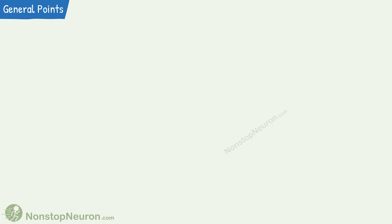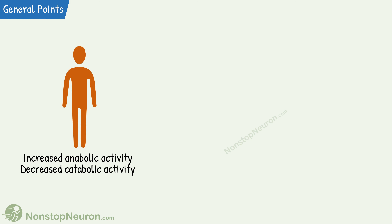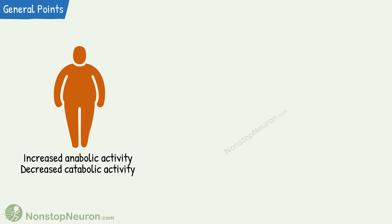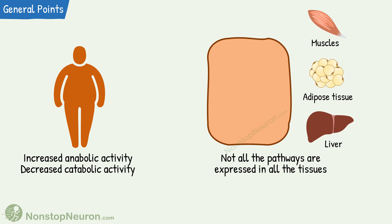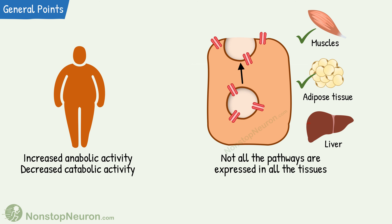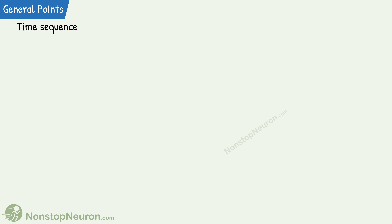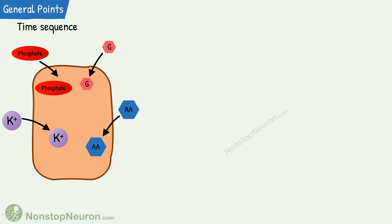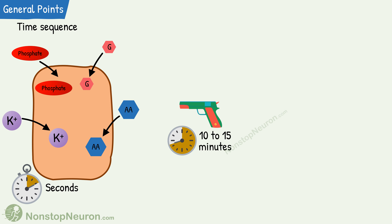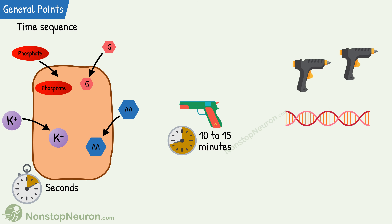Now let's talk about some general points. First, the overall effect of insulin signaling is increased anabolic activity and growth, and decreased catabolic activity. Second, not all pathways are expressed in all tissues. For example, the insertion of GLUT4 on the cell membrane is seen only in skeletal muscles and adipose tissues, but not in the liver. The third point is regarding time delay in appearance of different effects: increased entry of glucose, amino acids, potassium, and phosphate appear within seconds; changes in the activity of metabolic enzymes take 10 to 15 minutes; and much slower effects like changing the rate of translation and transcription can take hours to several days.